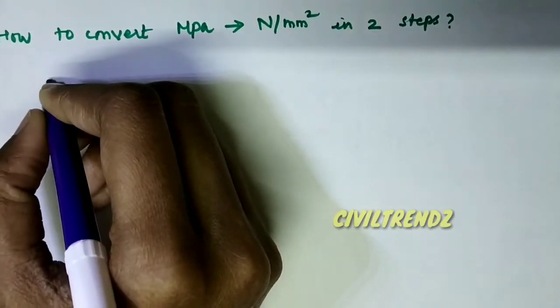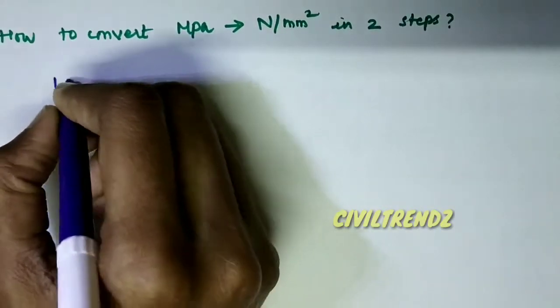First of all, 1 Mega equals 10 power 6. 1 Pascal equals Newton per meter square. Now 1 Megapascal equals 10 power 6 Newton per meter square.